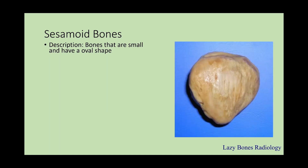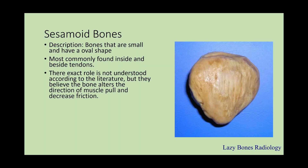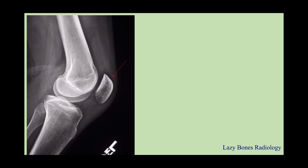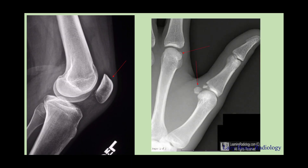Sesamoid bones are small with oval-like shapes, most commonly found inside or beside tendons. As you can see here on the right hand side, there's the patella. Their exact role is not fully understood according to the literature, but they are believed to alter the directions of muscles as they are pulled and relaxed, and to decrease the friction between bones. Hint — sesamoid — think of sesame seeds: very small, rounded seeds. The patella is the largest sesamoid bone in the body. Others are found beneath the metacarpophalangeal articulations and the metatarsophalangeal articulations. This is a lateral patella, and you can also see small sesamoid bones in the hand.